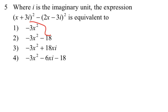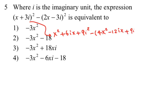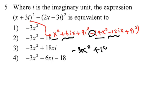Now number five: we're going to expand the first term, x plus 3i squared, giving x squared plus 6ix plus 9i squared. The second expression expands to 4x squared plus 12xi plus 9i squared. Looking at x squared terms: x squared minus 4x squared gives negative 3x squared. For the x terms: 6ix subtracting negative 12xi means adding, giving 18xi. The 9i squared terms cancel each other out, and the only possible answer is choice 3.